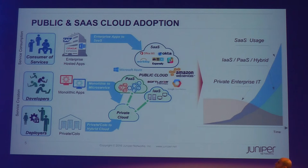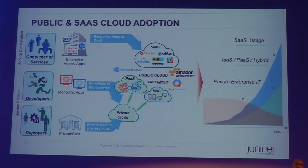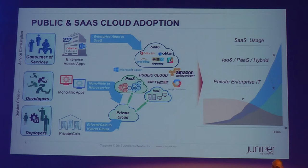I want to focus quickly on this public and SaaS cloud adoption trend. We see all the classical enterprise applications like mail, ERP, and so on moving from on-site deployment to a pure SaaS model. At the same time, developers moving from monolithic internal development frameworks to a PaaS type of framework have the possibility to use it for internal private cloud or public cloud, and they typically need interconnectivity between the two, as not all applications reside in one or the other. There is also enterprise-critical data that still resides inside the enterprise network.